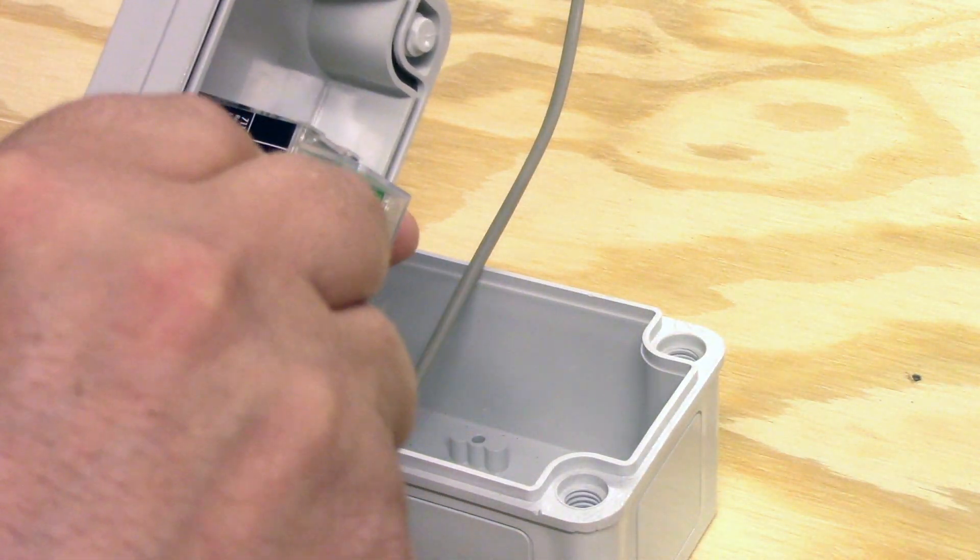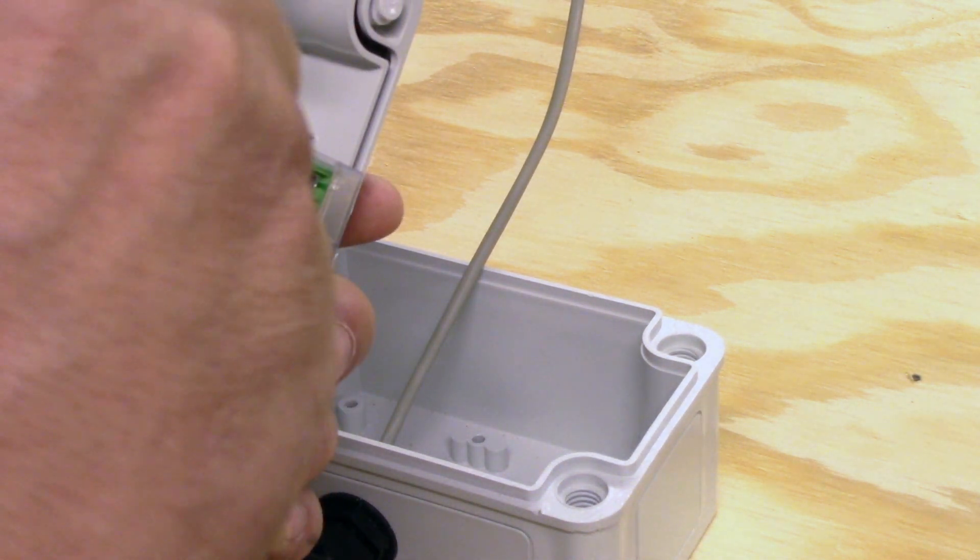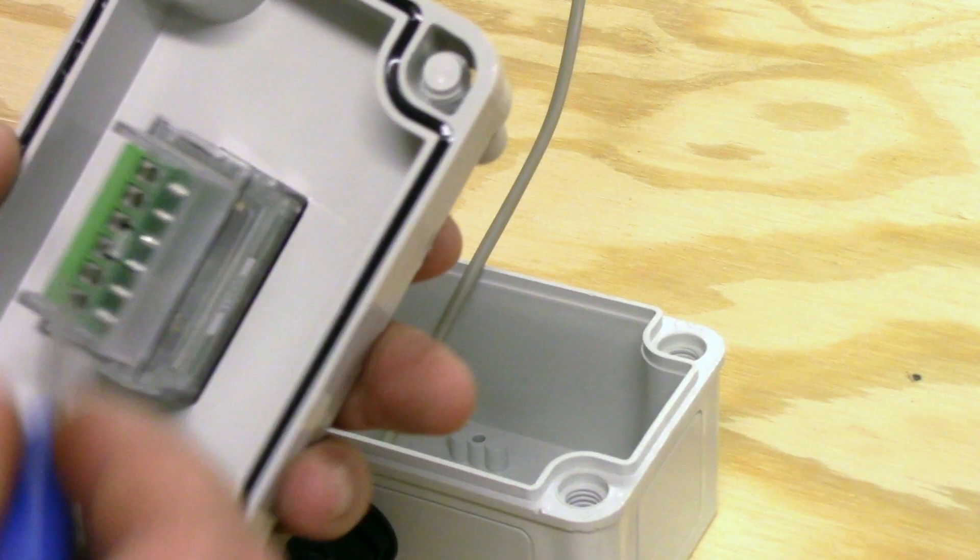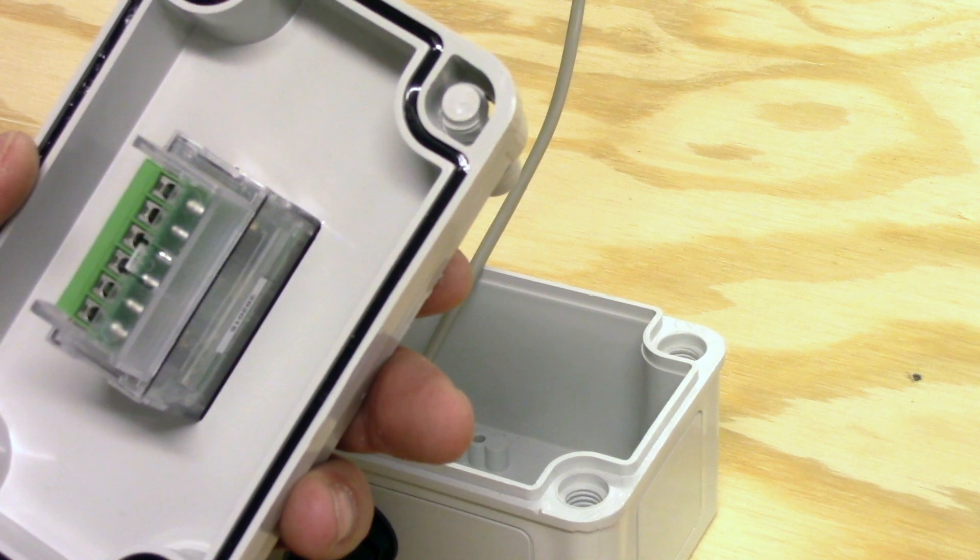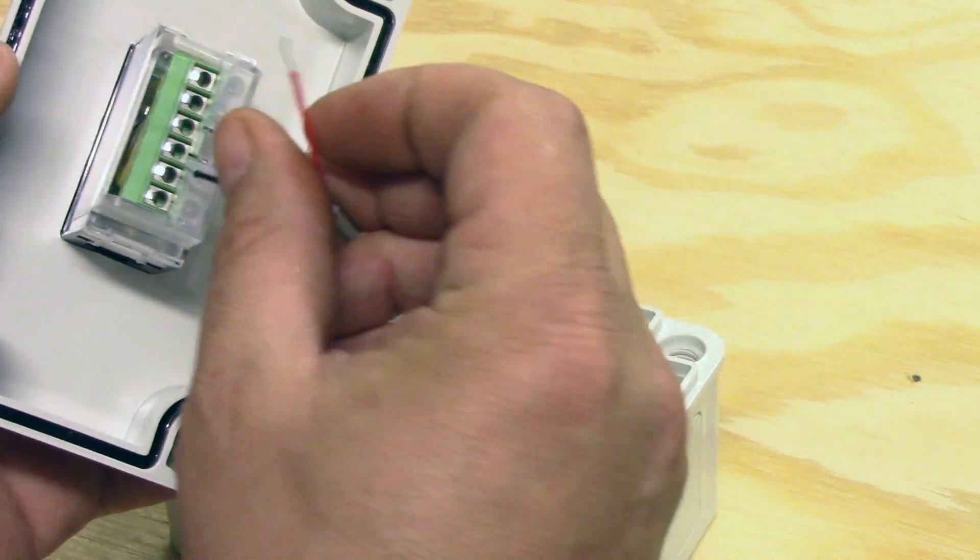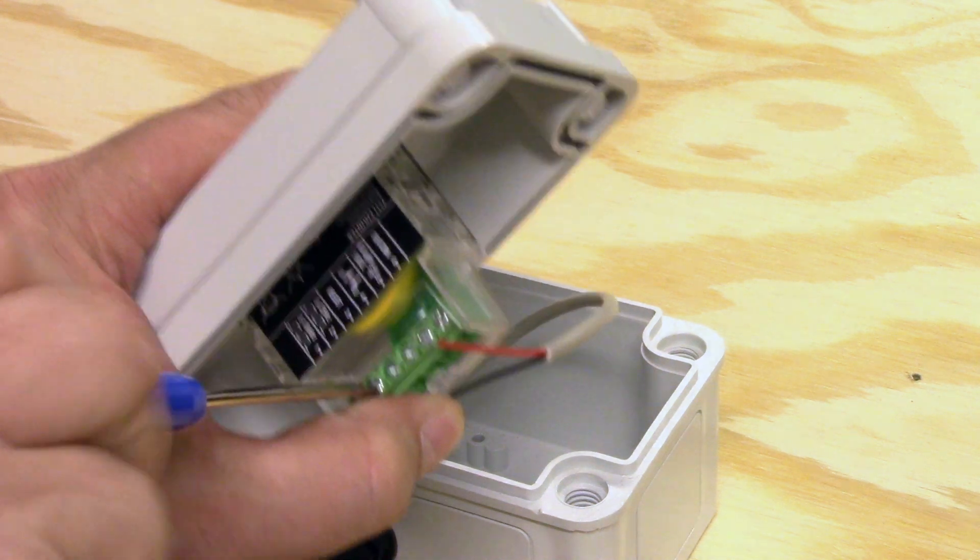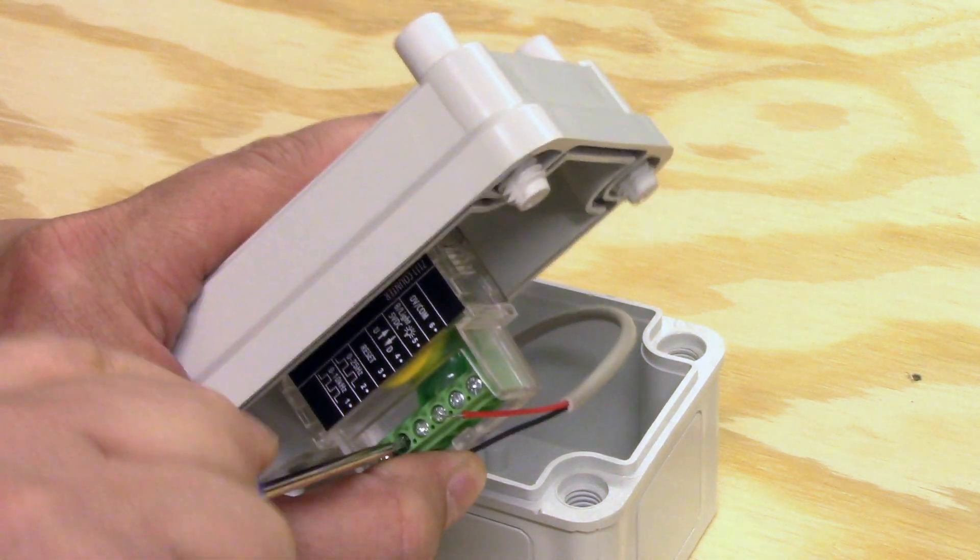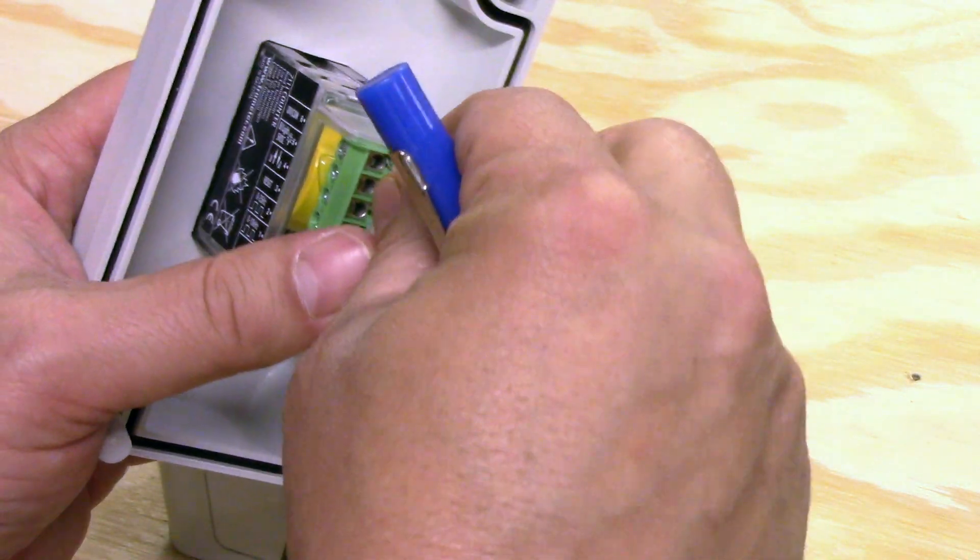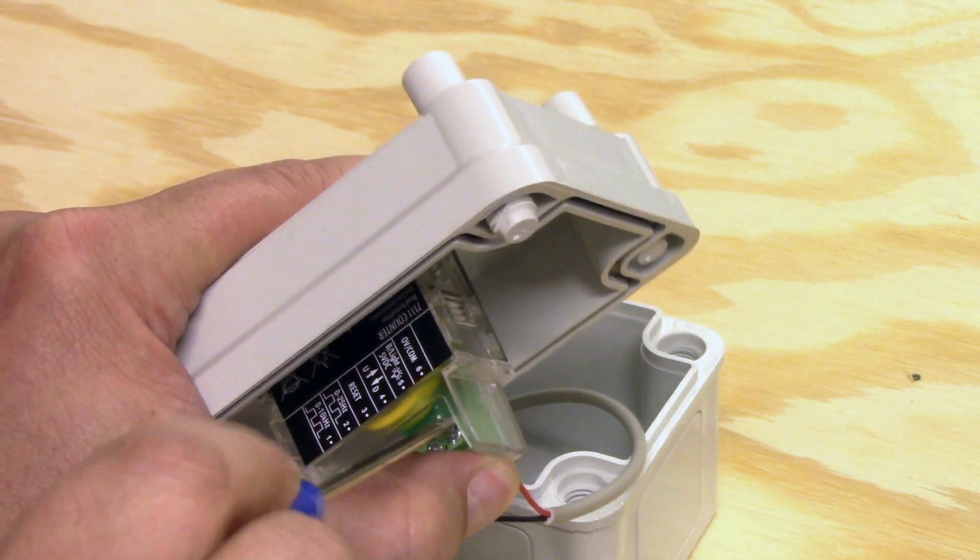Then you simply place one wire into number two and tighten that down and one into number six and tighten that down.